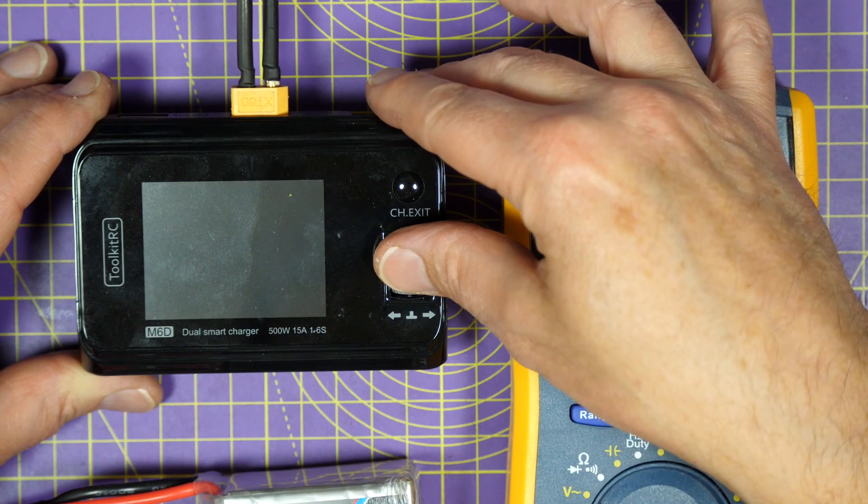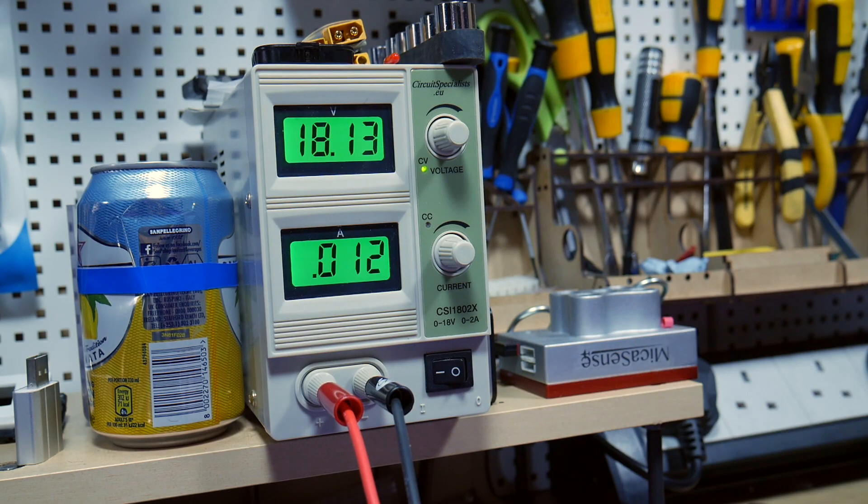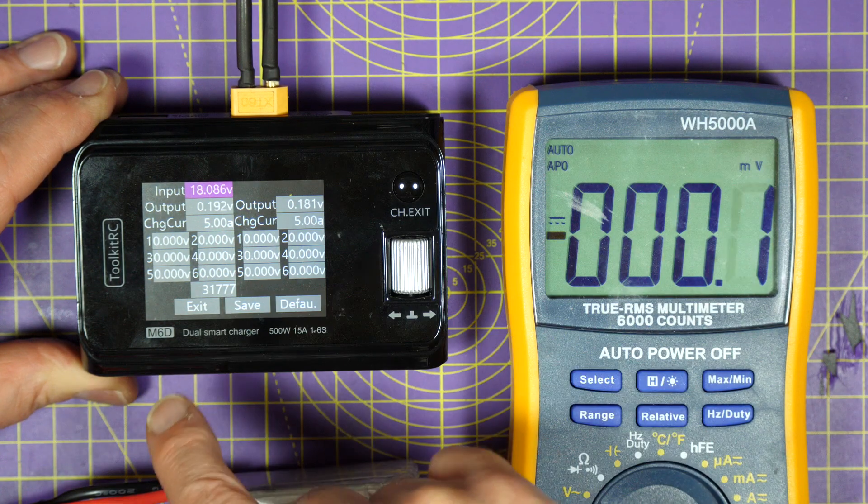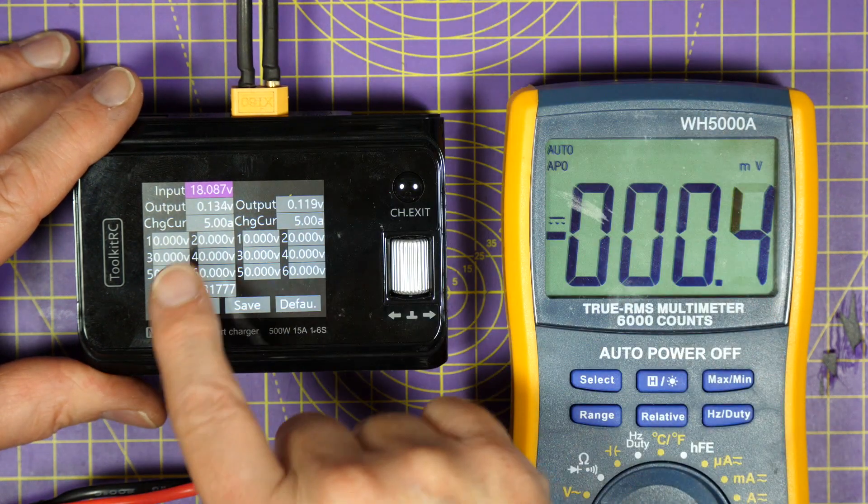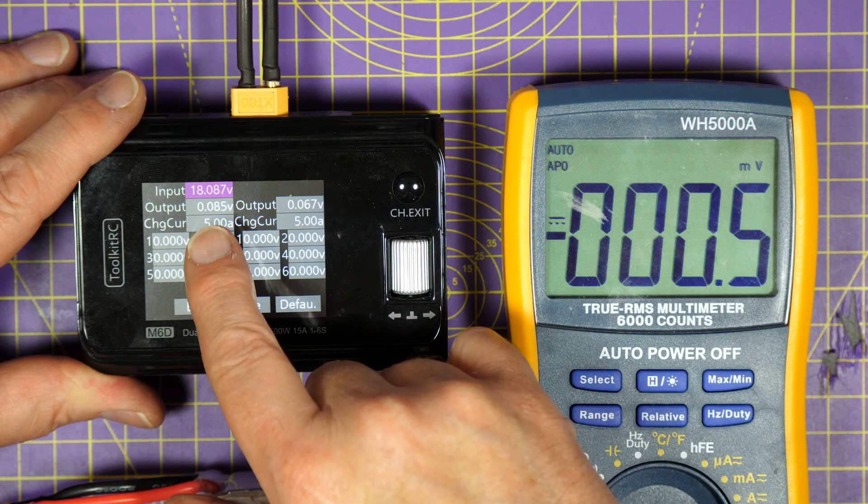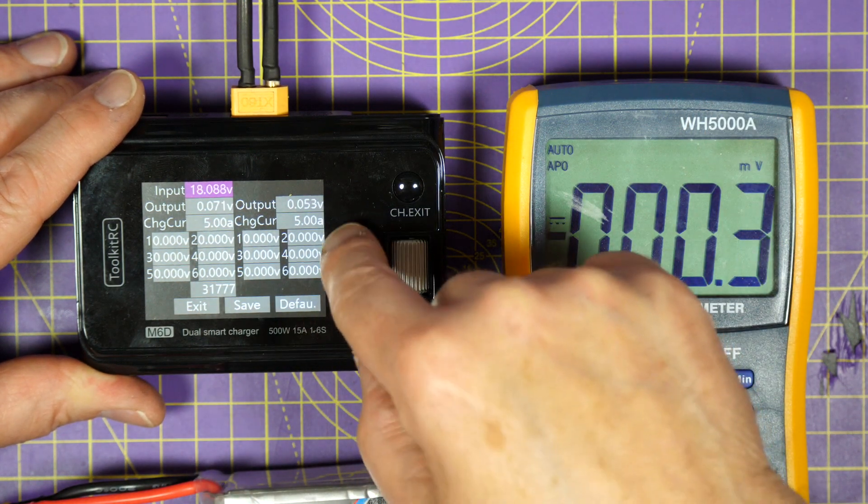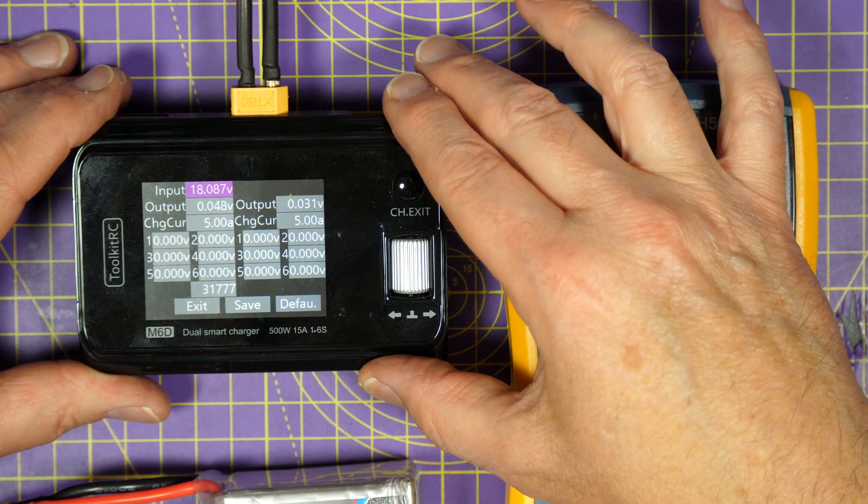To get into calibration mode, hold down the scroll wheel and turn the power on. There we go, and we are in the calibration page now. The first thing we're going to do is actually check that the input voltage is correct. Now I have actually calibrated this before when I first got it, so I'm hoping things won't have changed too much.